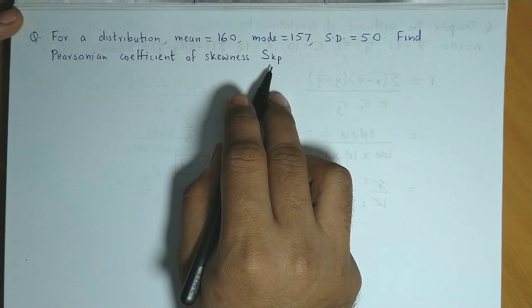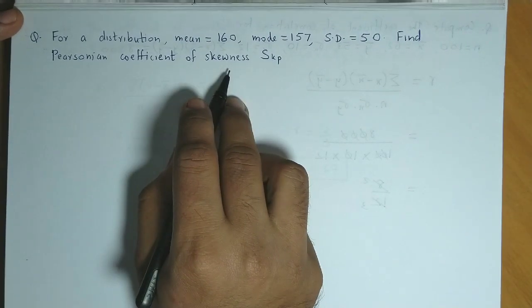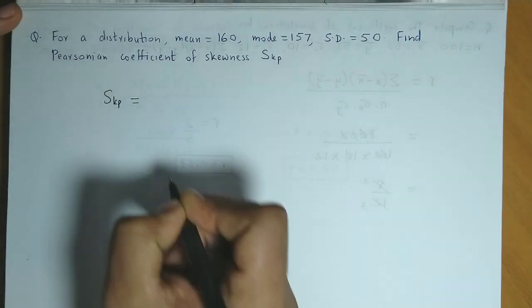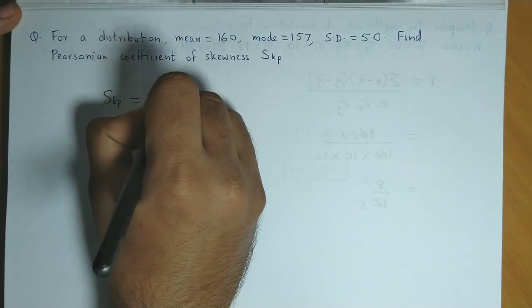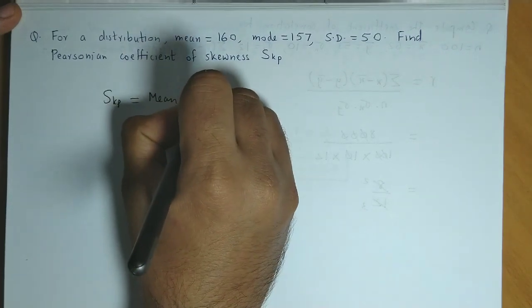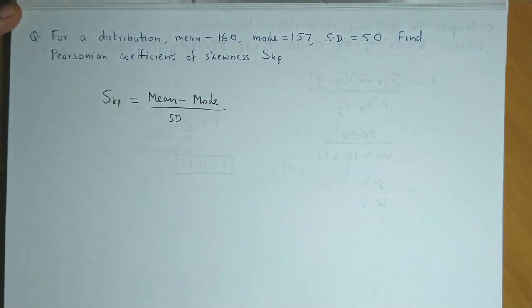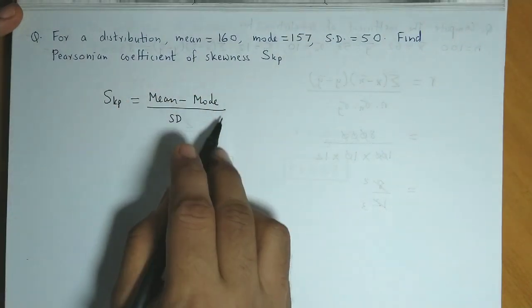We have to find Pearson's coefficient of skewness. Now the formula is mean minus mode divided by standard deviation. Now let's substitute all the values.